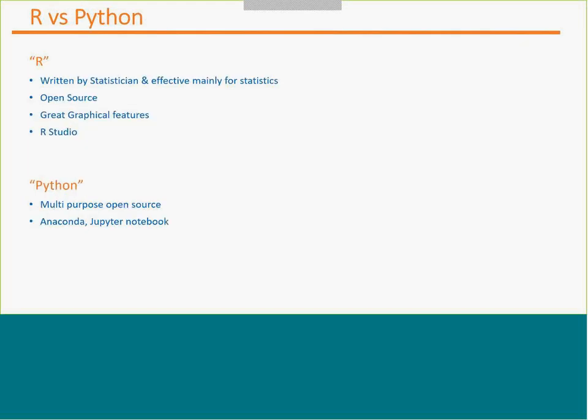There was a discussion about R versus Python — which language is better. There is no certain answer; both languages are good. R has a steep learning curve, but with one line of code you can do a lot. R is written by statisticians and has very nice graphical features. Python is open source and multipurpose. With Python, you can work on Anaconda and Jupyter Notebook, similar to how you'd use VSTS for .NET code.